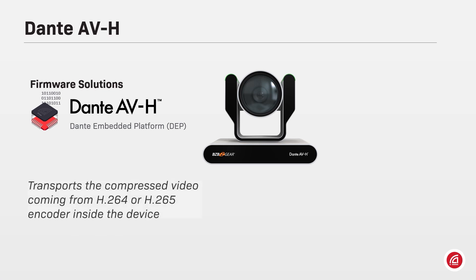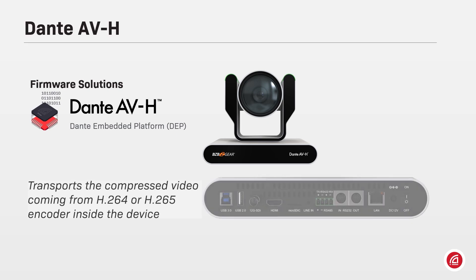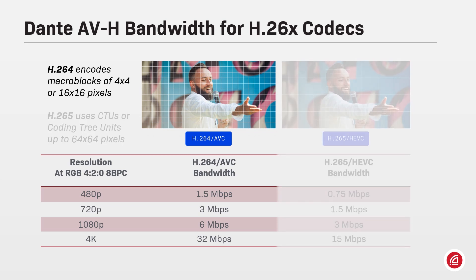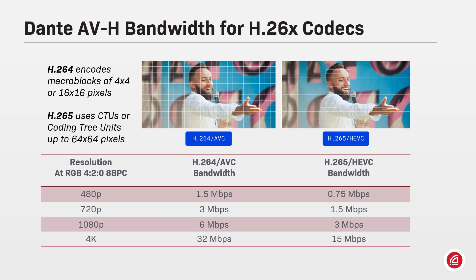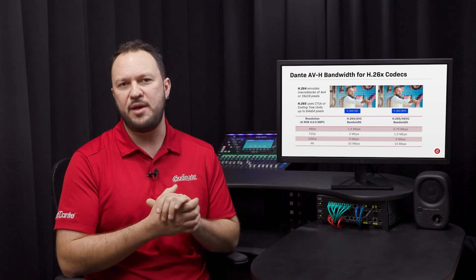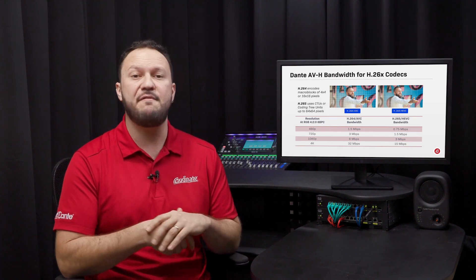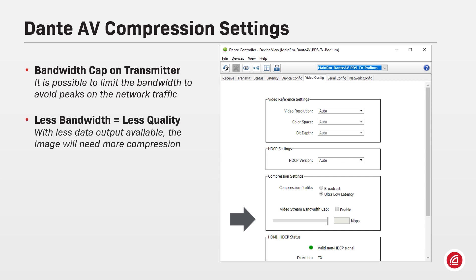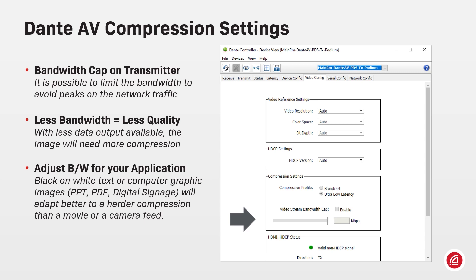Dante AVH will transport the compressed video coming from the H.264 or H.265 encoder inside the device. H.264 encodes macro blocks of 16 by 16 pixels, whereas H.265 uses coding tree units that can identify important areas on the picture with a 64 by 64 block of pixels. With a more efficient sampling technique, H.265 is usually half the bandwidth of H.264 and can still bring very good image results. On the device view video config tab, it's possible to limit the maximum bandwidth of a video stream coming from a Dante AV device. The harder you apply the compressor, the less data will be available to transport that image. Simple images such as text and solid colors will behave differently than complex images such as a camera feed or a high resolution movie.